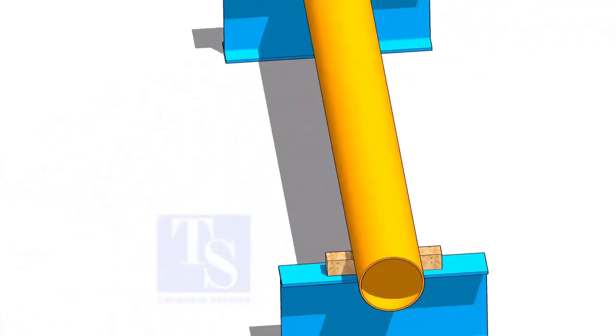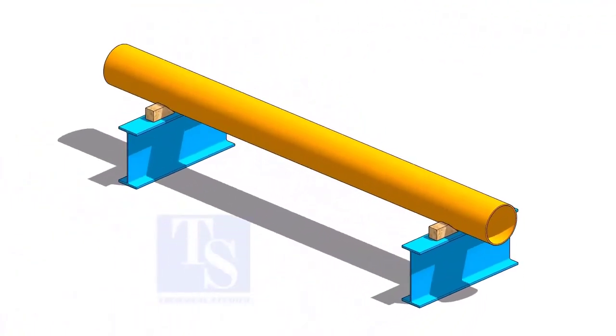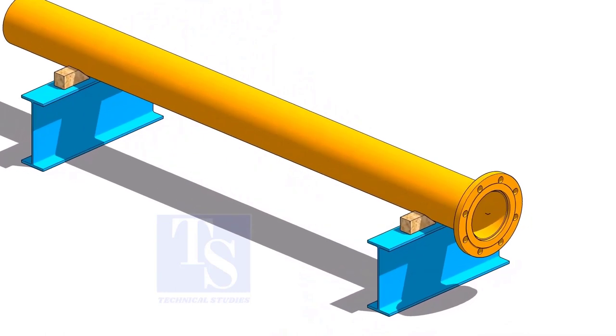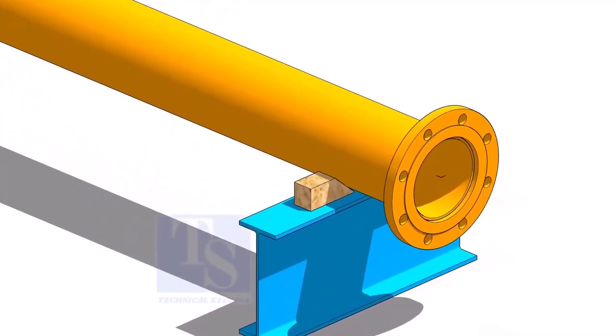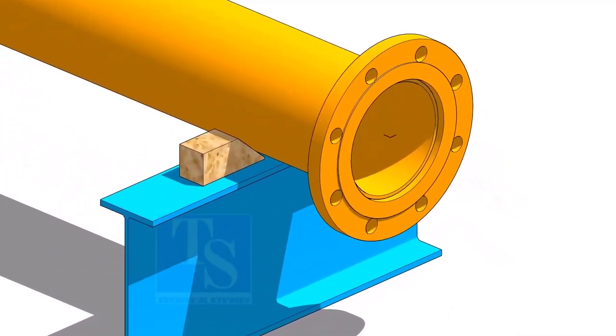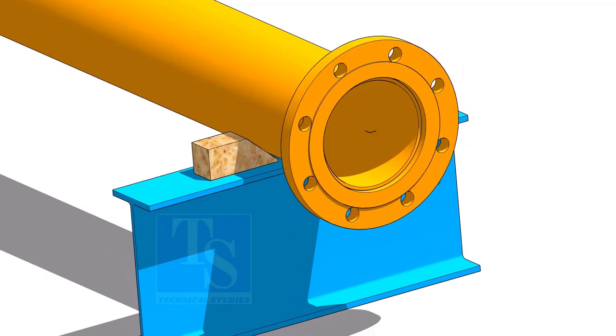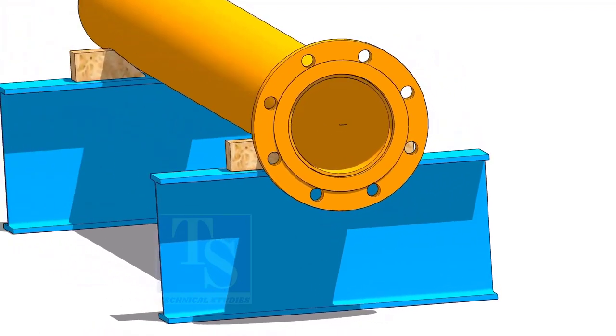Put the pipe on the supports and level the pipe roughly. Put packing on both sides of the pipe. Put the flange on the pipe. The hole centers of the flange shall be roughly vertical.